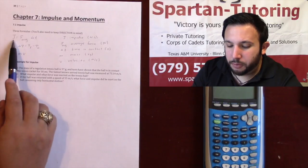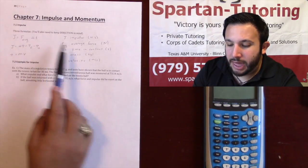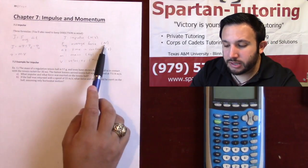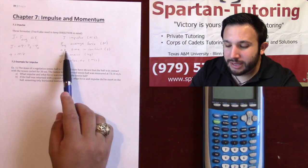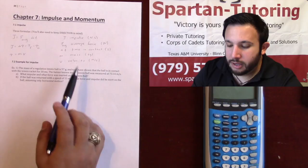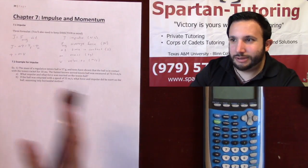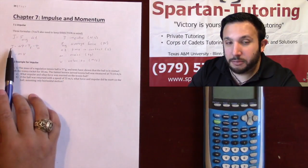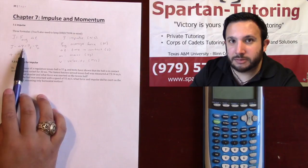Impulse is equal to the average force times your change in time. F-average is average force, its units need to be in newtons, and your change in time is the time that something is in contact. Impulse is also equal to your change in momentum.